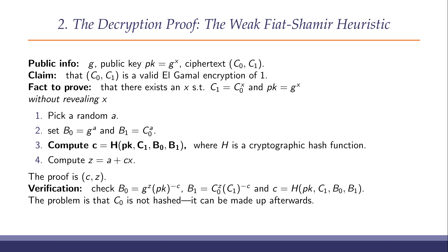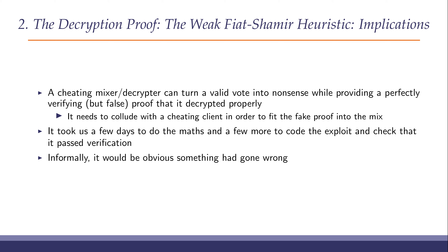This is called the weak Fiat-Shamir heuristic, and the obvious correction is that C0 needs to be hashed as well. This was easy to spot because Olivier and his colleagues had already written a paper about this — they'd made the same mistake in their Helios internet voting system and corrected it some years before. The implication is that a cheating mixing and decryption component — just one of those boxes — can turn a valid vote into total nonsense while providing a perfectly verifying but completely false proof that a decryption is correct. It took us a few days to do the maths and a few more days to code the exploit and check that it passed verification.